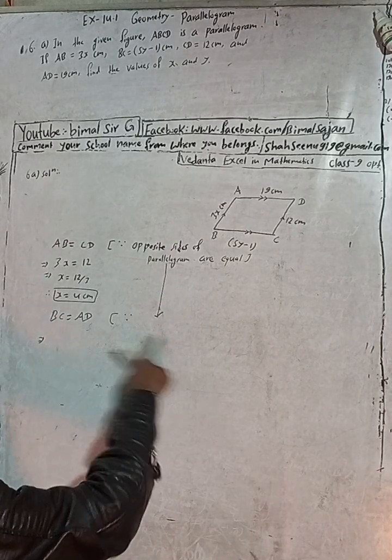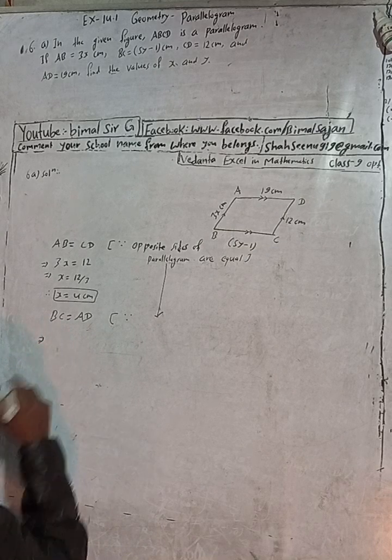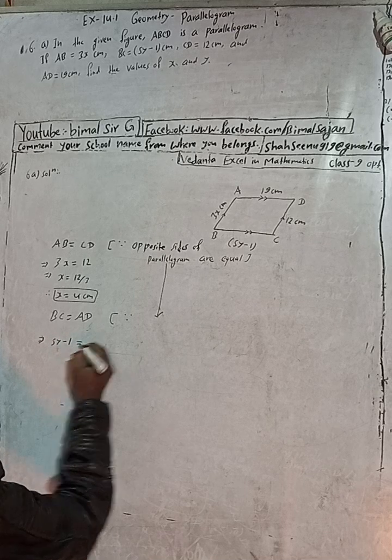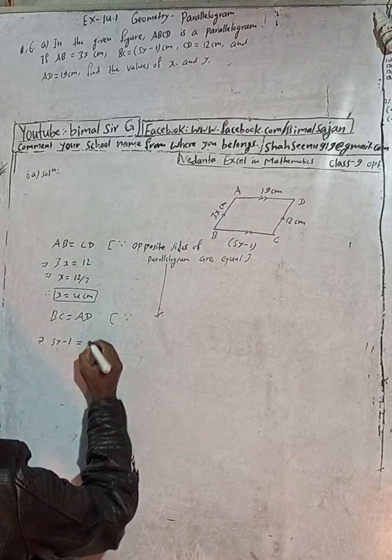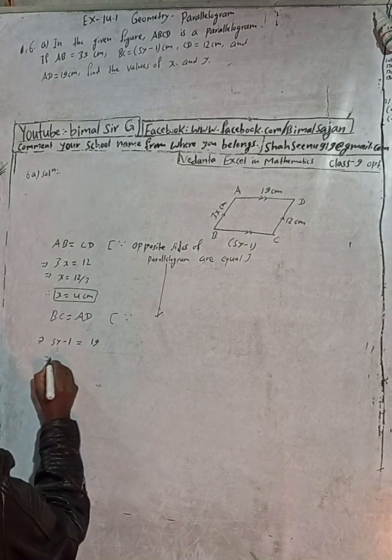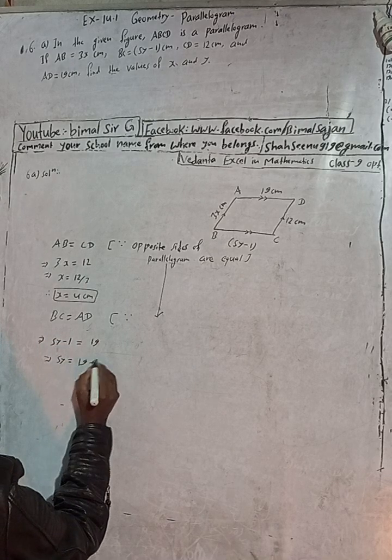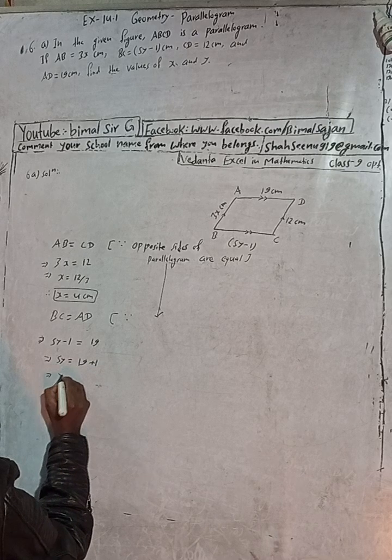Here BC is equal to 5y minus 1, is equal to AD is 19, so 19.